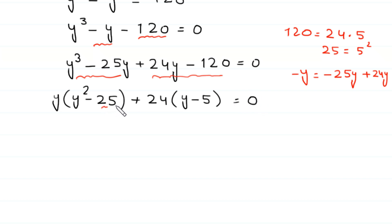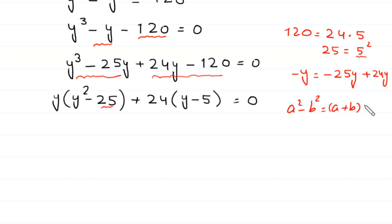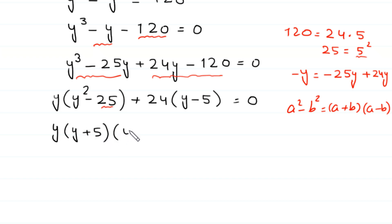Now, 25 is the same as 5 squared. So we can factor y squared minus 25 using the algebraic identity a squared minus b squared equals (a plus b)(a minus b). We write y times (y plus 5)(y minus 5) plus 24 times (y minus 5) equals 0.